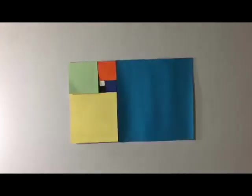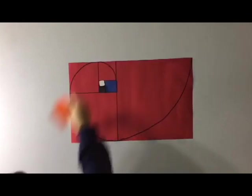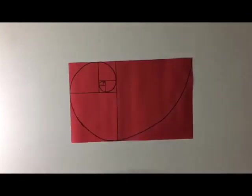We can repeat this process by drawing squares on the rectangle's length until we obtain this, and the spiral we see over there is called the golden spiral.